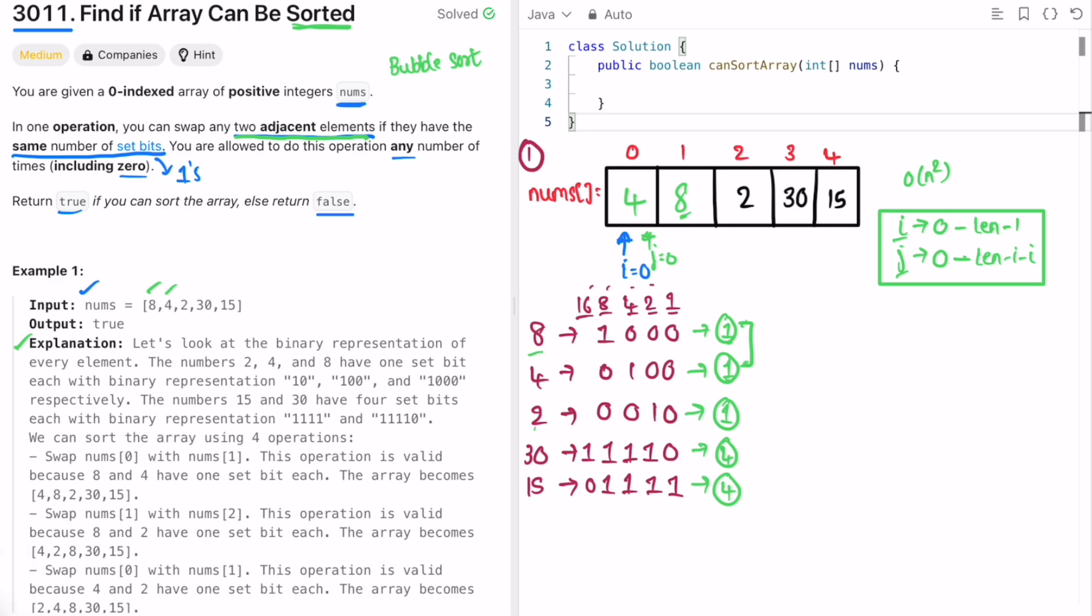Again we can see now 8 and 2 are also having the same set bits of 1, so we can swap these two.